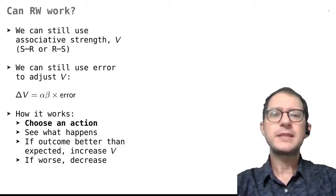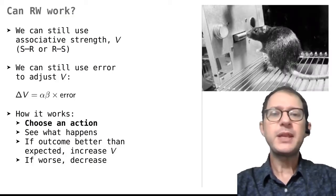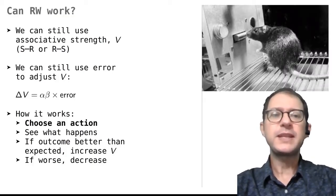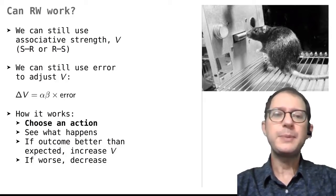As I mentioned on the previous slide, we can still think of an associative strength that changes, and we can also continue to use the error as the guiding principle for learning. For example, imagine the usual rat in the usual Skinner box where it can press a lever to get food. At the beginning of training, the rat does not know that pressing the lever produces food.